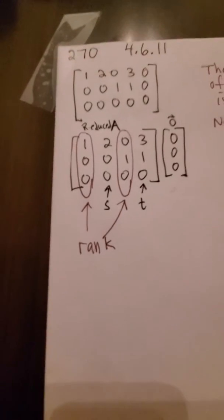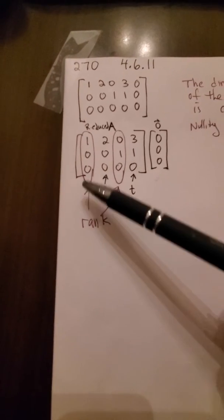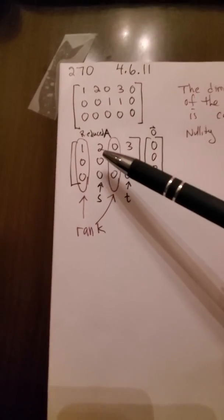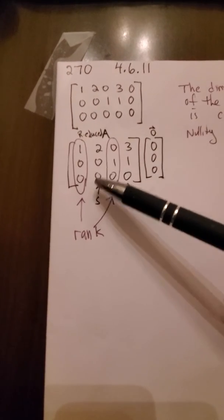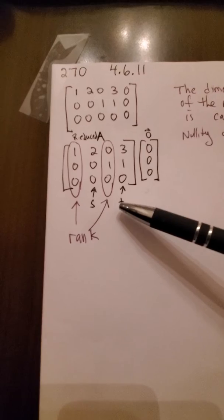And we know from experience that the columns that have leading ones is where our rank comes from. And if you notice, the columns that don't have leading ones is where the parameter guys come from.